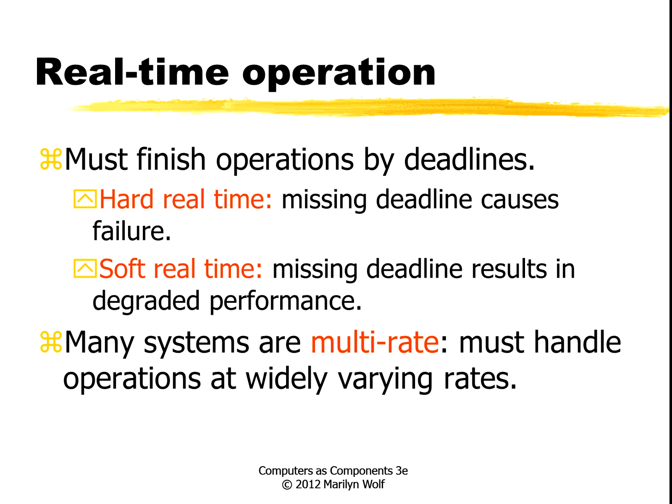Real-time operation basically means that you have to finish an operation by a deadline. A deadline is a fundamental concept. There are several varieties of real-time, and you'll hear somewhat different definitions of them. I'm going to use hard real-time to mean that if you miss the deadline, the system fails. Some people limit hard real-time to safety critical, but I'm going to expand that definition a little bit. In contrast, soft real-time means that the performance of the system is degraded but it doesn't totally fail. Computing for real-time is hard enough, but it's even more complex because many systems require multi-rate computation — that is, different tasks in the system have their own deadlines that occur at different frequencies. So juggling these multi-rate tasks is one of the key challenges in embedded system design.